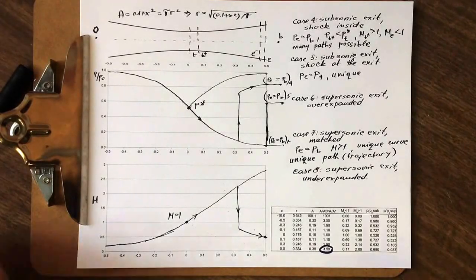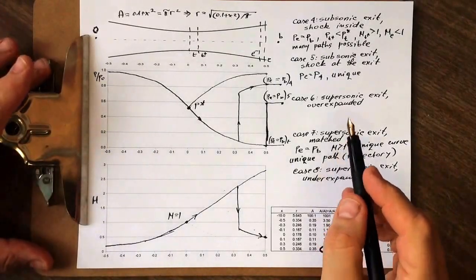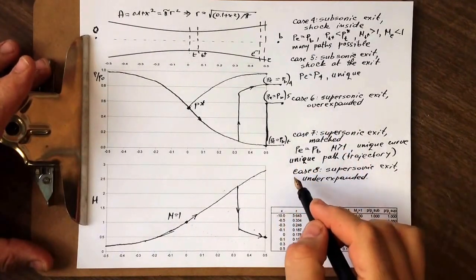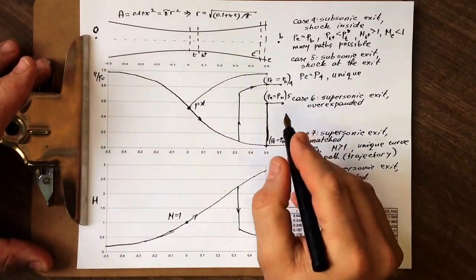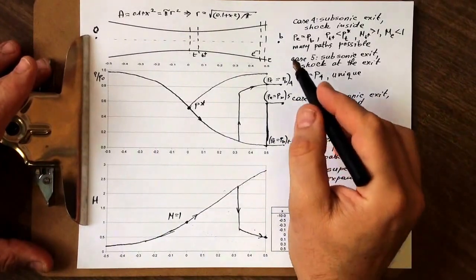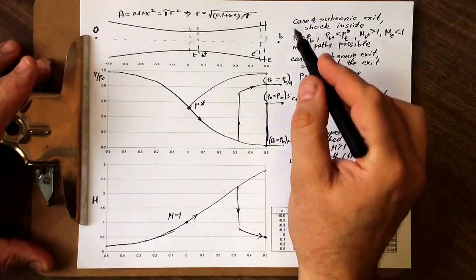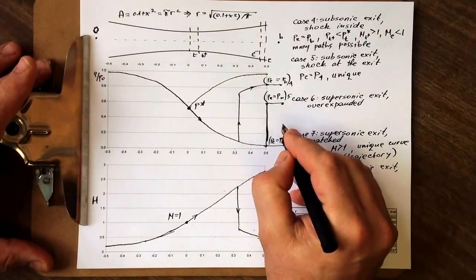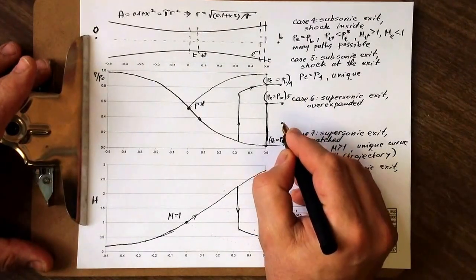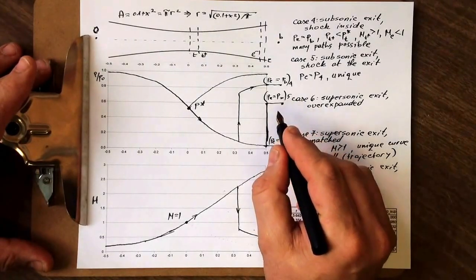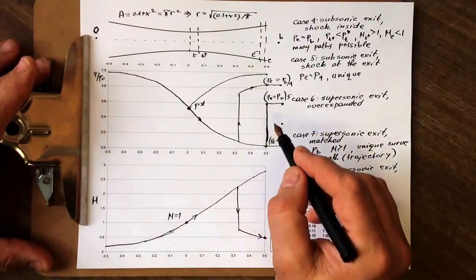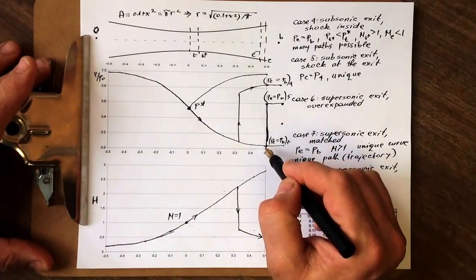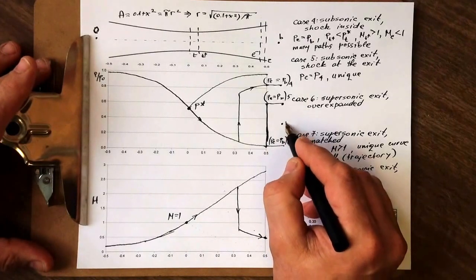Finally, the last two regimes we're going to cover are case number 6 and case number 8. As I already mentioned, all these cases are numbered by gradually reducing back pressure. So if we have some back pressure that's below B5, where we had the shockwave sitting at the exit, we now have PB6.